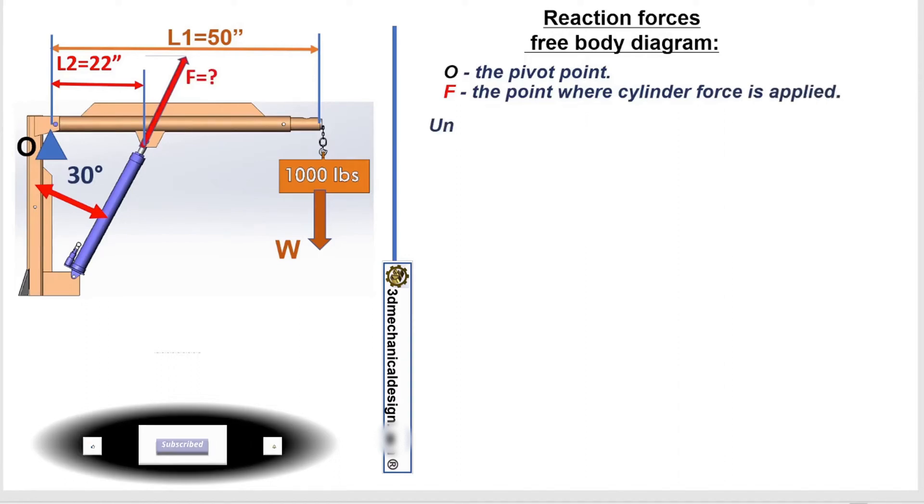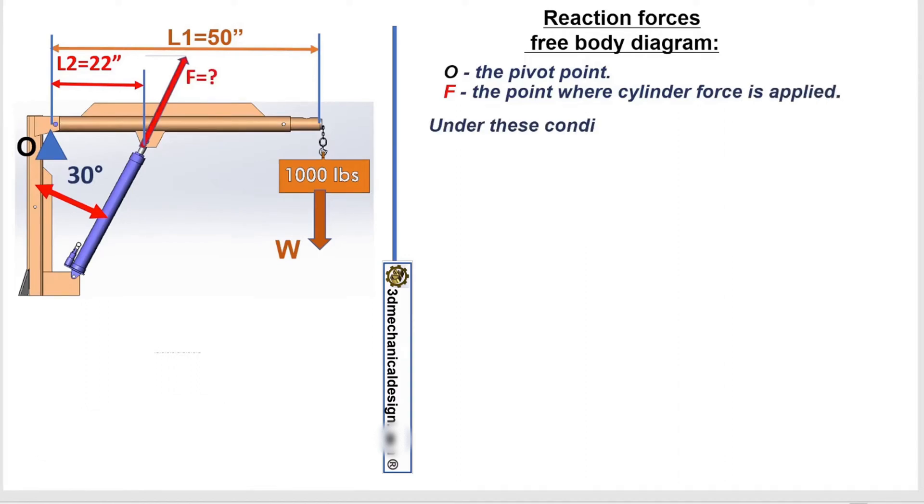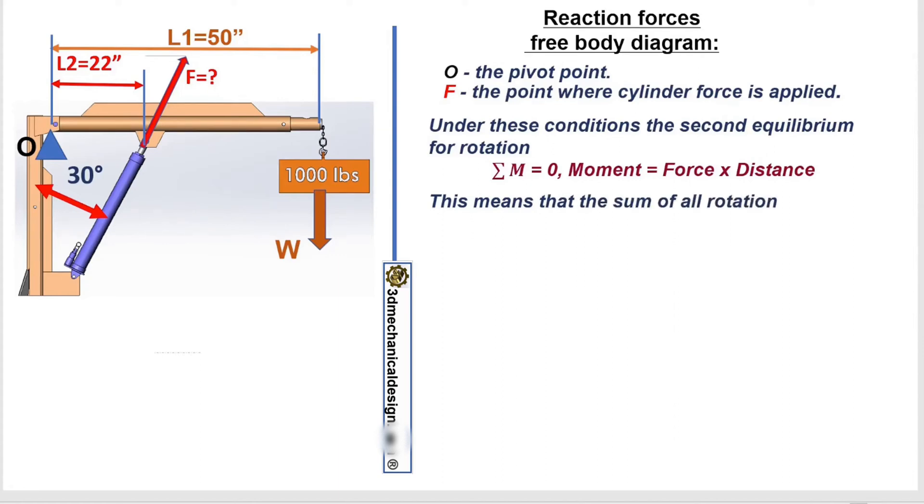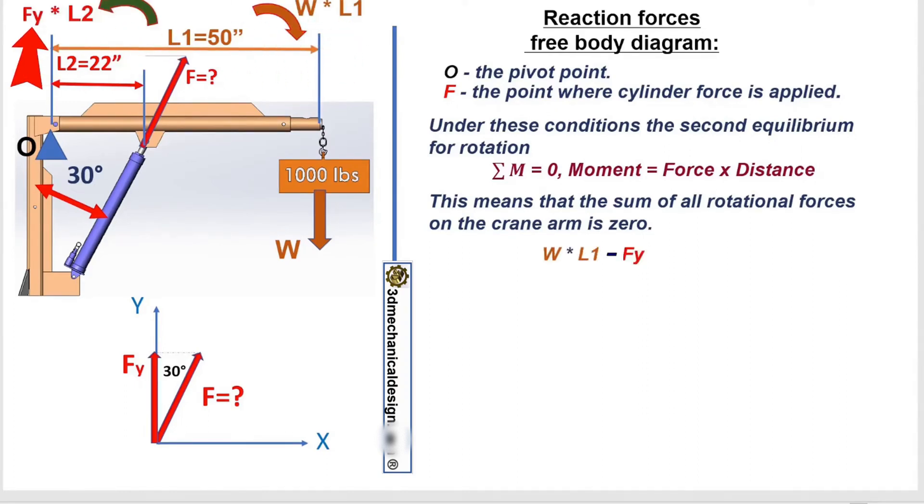Under the conditions of the second equilibrium of rotation, sum of M equals 0. M is moment of forces equals force times distance. This means that the sum of all rotational forces on the crane arm is 0. W times L1 minus Fy times L2 equals 0.